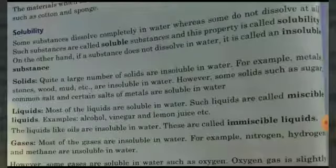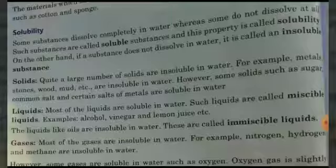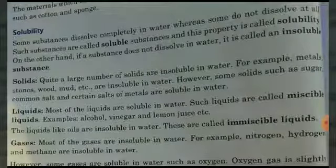Next is solubility. Some substances dissolve completely in water, whereas some do not dissolve at all. The property of dissolving in water is called solubility. Substances which dissolve completely in water are known as soluble substances, and this property is called solubility. If a substance does not dissolve in water, it is called an insoluble substance.